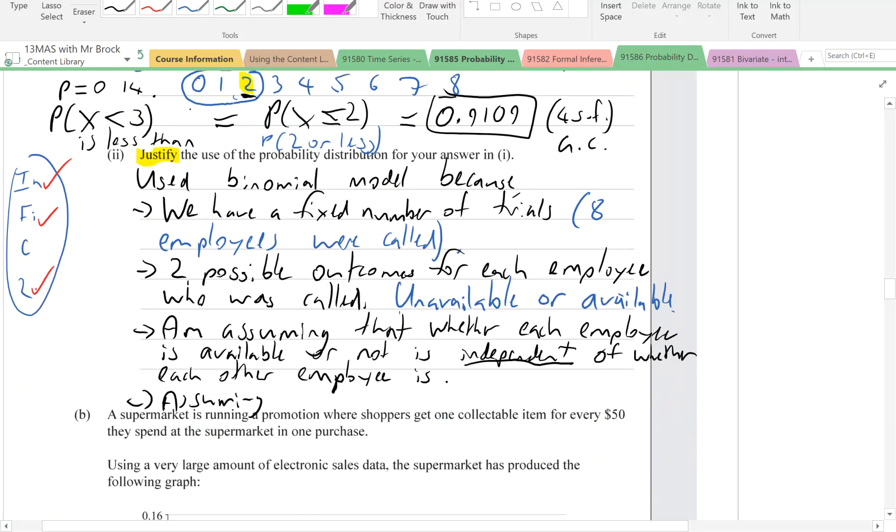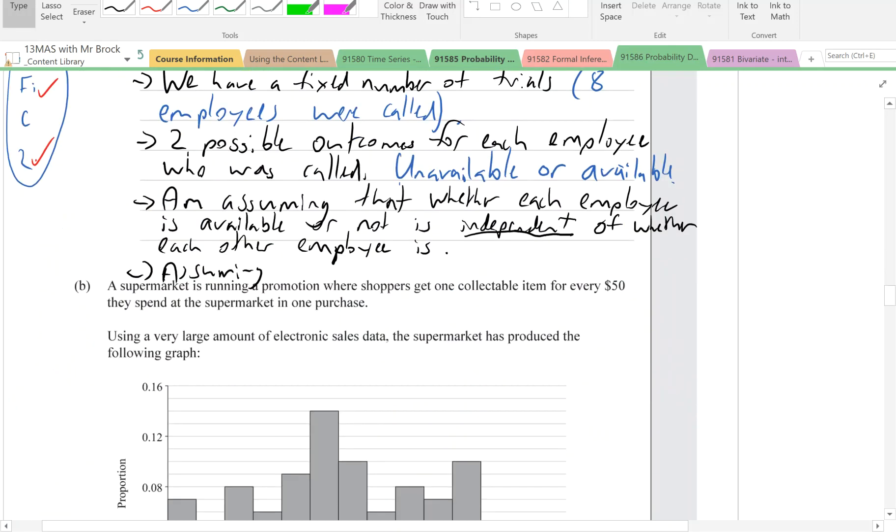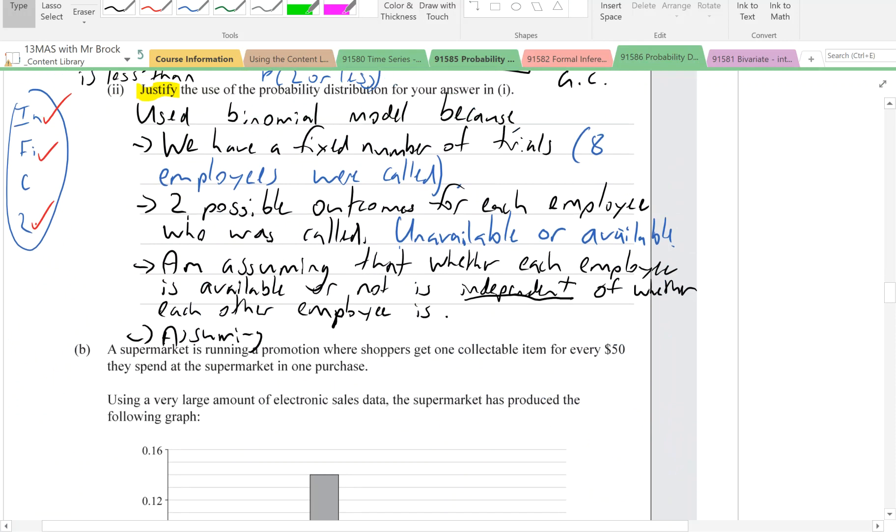That actually may not be true. There might be other things causing them to be more or less likely to be unavailable. So we're assuming that each of the eight employees has a 0.14 chance of being unavailable.